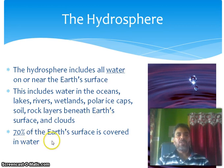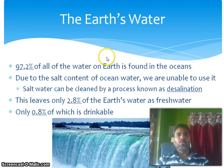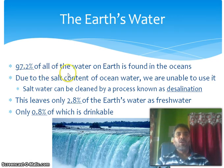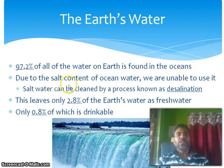70% of earth's surface is covered in water. 97.2% of all of the water on earth is found in the oceans. Due to the salt content of ocean water, we are unable to use it.